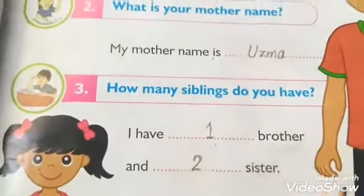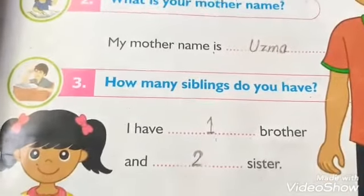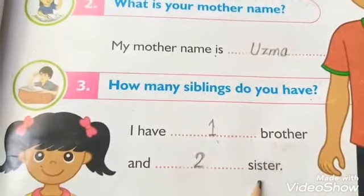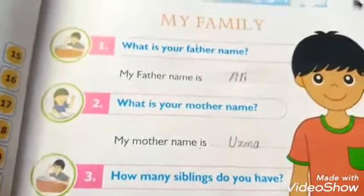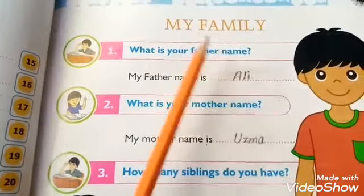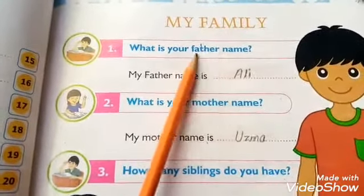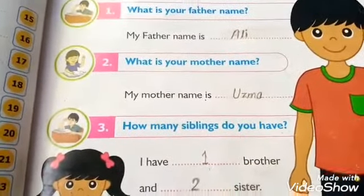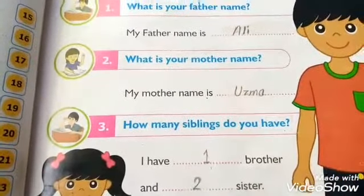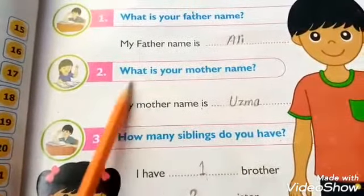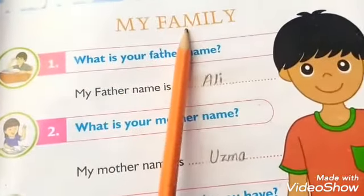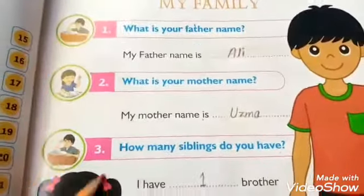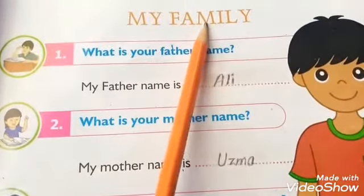Okay students, you will write how many brothers and sisters you have. In a family there are father, mother, sister and brother. When they are living together, it makes a family. So all these questions are about your family.